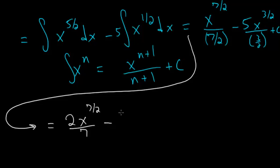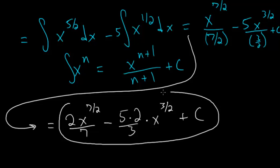So we'll have five times two divided by three times x to the three-halves plus c. We can simplify this to ten-thirds as well, but this is our final answer.